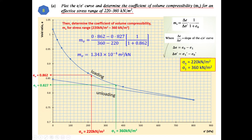We are working with the stress range from 220 to 360 kN/m². For stress e₀ at 220 kN/m², we go to the graph, identify the value of 220 on the x-axis, move up to touch the loading curve only, then bring it across to the y-axis. The corresponding void ratio e₀ is 0.862.